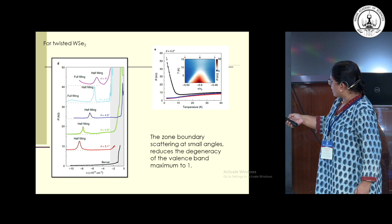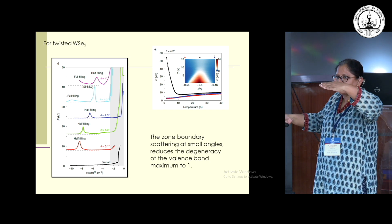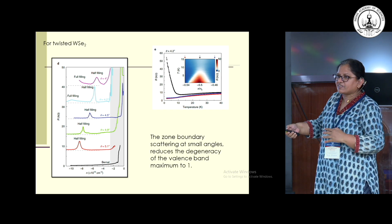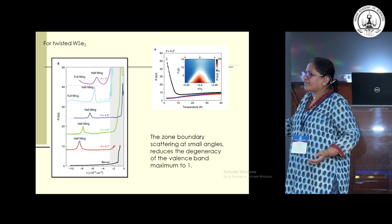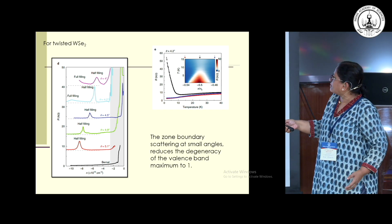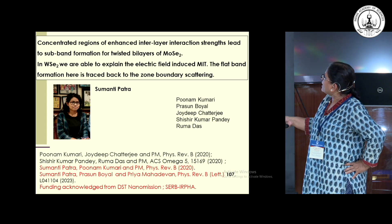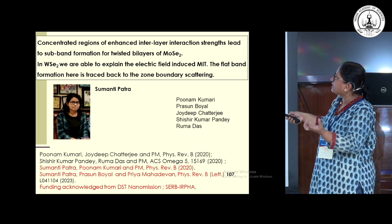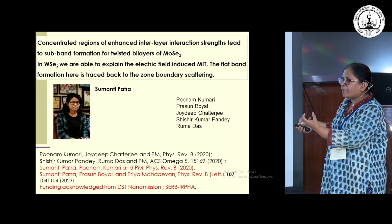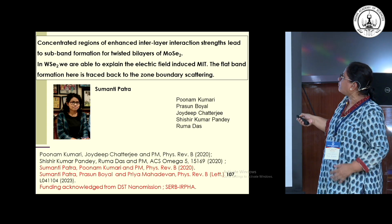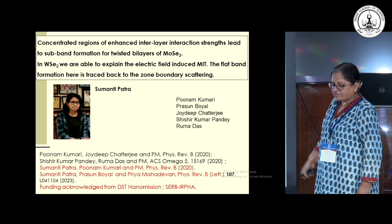In conclusion, it is concentrated regions of enhanced perturbations which lead to flat band formation in twisted MoSe₂ bilayers. In twisted tungsten diselenide, it is zone boundary scattering which is responsible for flat band formation. Furthermore, because of zone boundary scattering, the degeneracy is reduced to one at the valence band maxima at K, meaning there is only one band in this case — and this one-electron mean-field picture seems to capture various aspects of what's happening in these systems. This work was done by my former graduate student Sumanti Patra as part of her thesis.